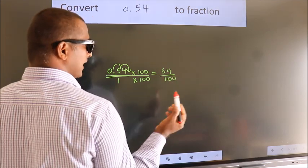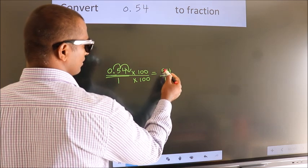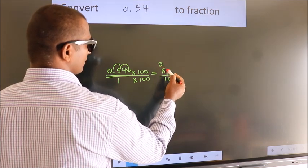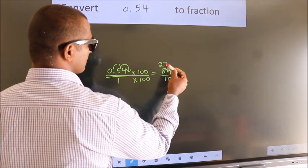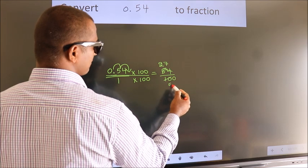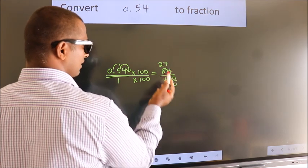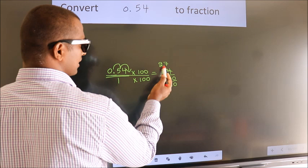Now I cancel with 2. We get 27 over 50. This cannot be simplified further.